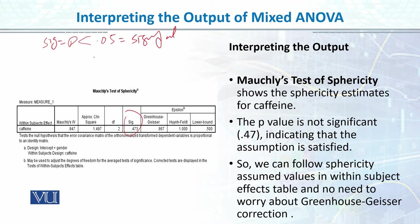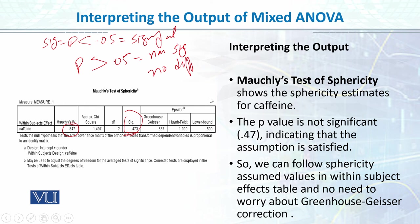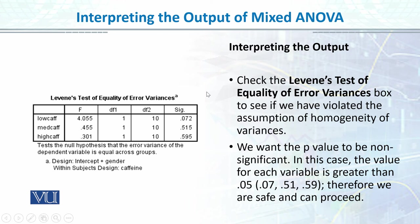When we say our value is non-significant, it means P is greater than 0.05 — no difference — and this satisfies our assumption. Whether it is Mauchly's test, Levene's test, or Box's M test, what we want is the SIG value to be non-significant. When there are independent groups, we run those tests accordingly.